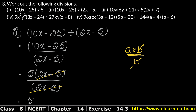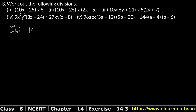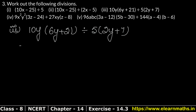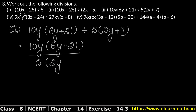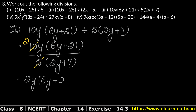Let's do the next part. The third part is 10y into (6y plus 21) divided by 5 into (2y plus 7). Now, 5 twos are 10, so we can simplify 10y over 5 to get 2y. This gives us 2y into (6y plus 21) divided by (2y plus 7).